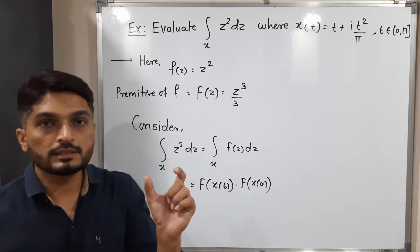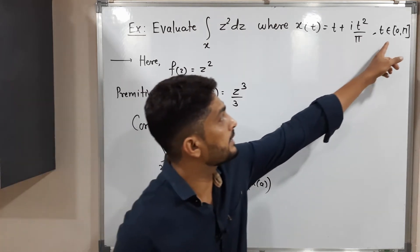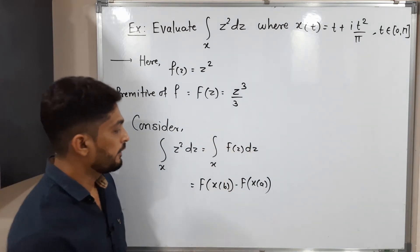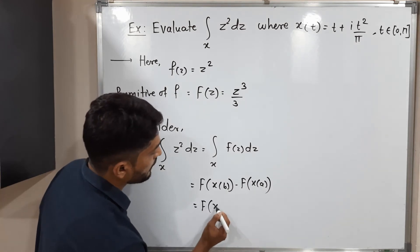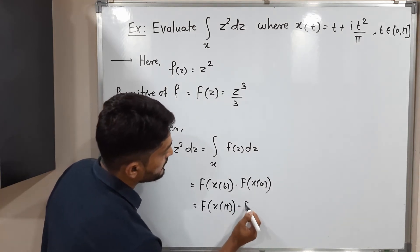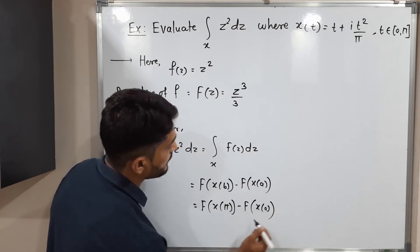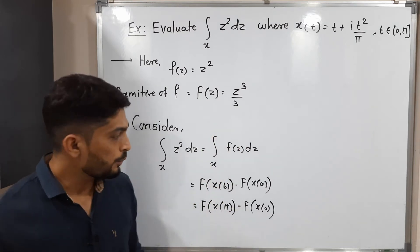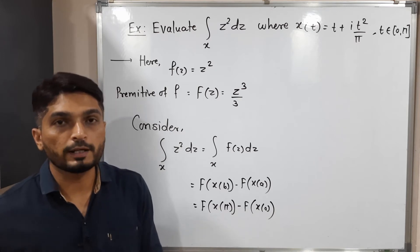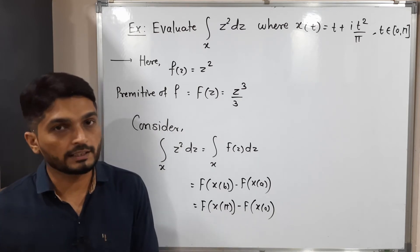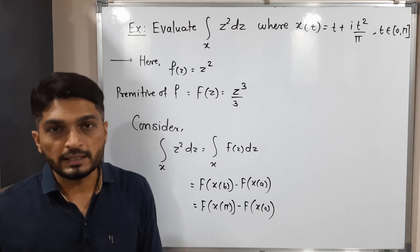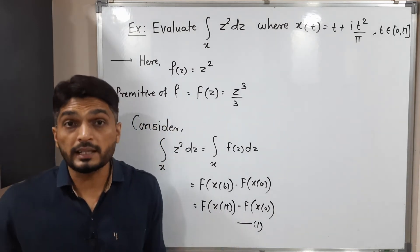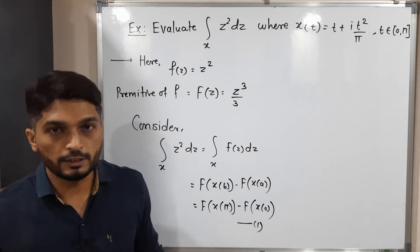Small a and small b are the endpoints of the interval. The given interval is 0 to pi, so small a is 0 and small b is pi. Let us put these values: F of X of pi minus F of X of zero, since a is zero and b is pi. We will call this equation number one. We will find the values of these two terms separately and substitute them at the end.